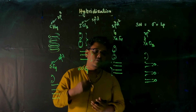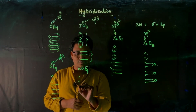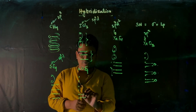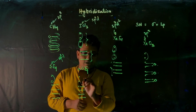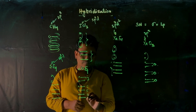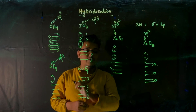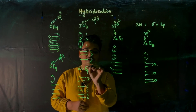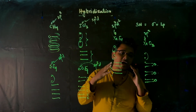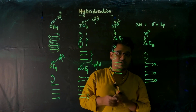For SOF₄, sulfur again has six valence electrons. Four fluorine atoms form four sigma bonds, and oxygen forms a double bond — contributing one sigma and one pi. So we have five sigma bonds total, and the hybridization here will be sp³d. Similarly, we can find the hybridization of any central atom in p-block elements using this method.